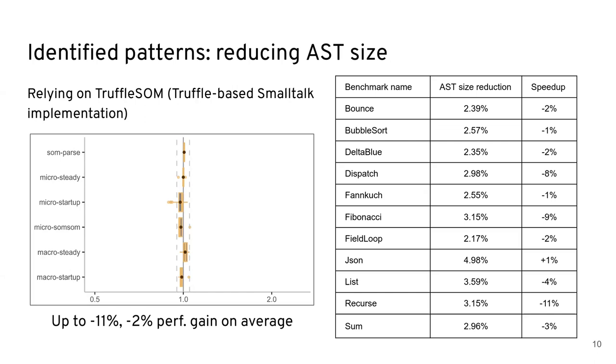And our results rely on truffle-based small talk implementation we use for experiments. We get down to minus 11% when it comes to performance, with around minus 2% performance gain on average. So if we look at how much the AST is reduced, it's around between 2 to 5% for most benchmarks. But there's no linear correlation between actually reducing the size of the AST and the actual speedup.